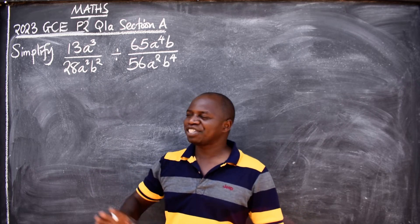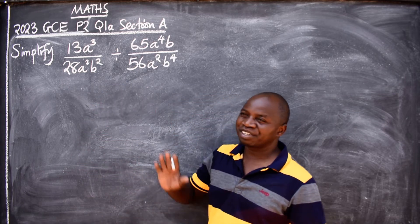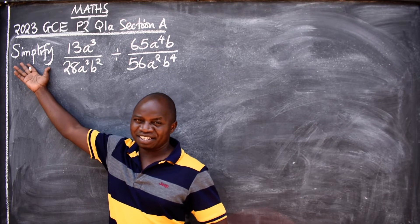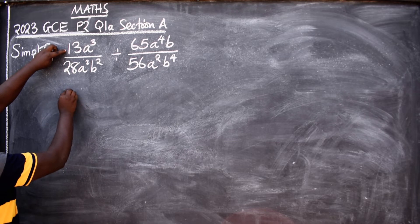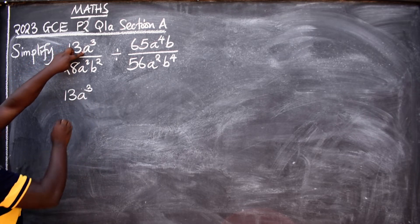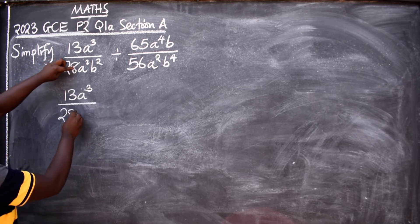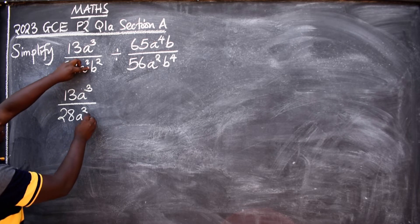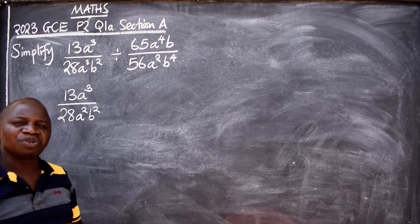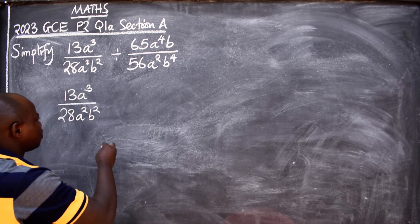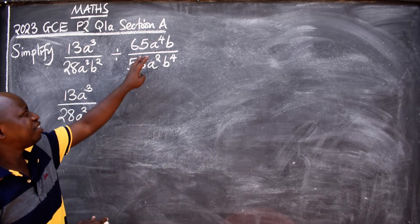Let's identify the topic from which the question is coming from: algebra. And we are told to do what? Simplify. Let's begin. So we have 13A³, you copy it the way it is, divided by 28A²B². Then we have this division symbol. What should you do? You change it to multiplication.